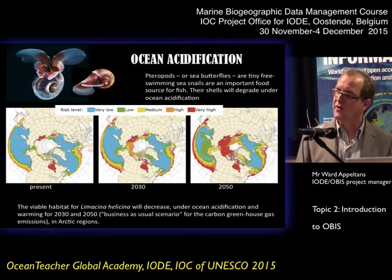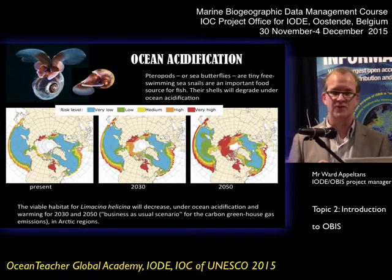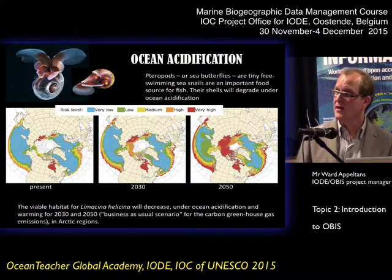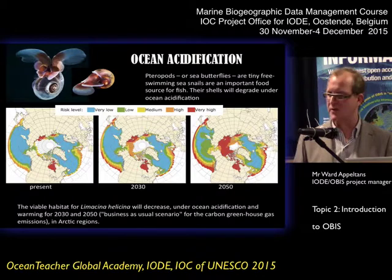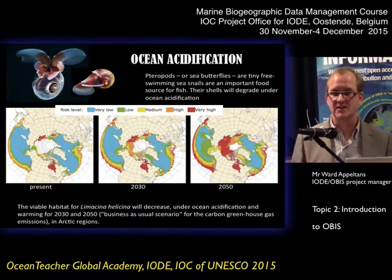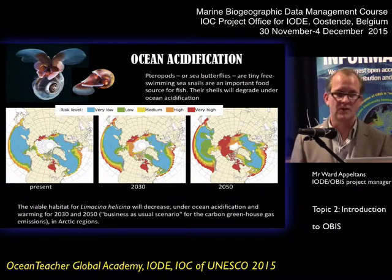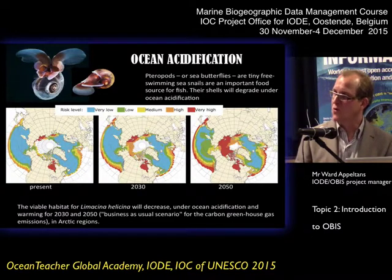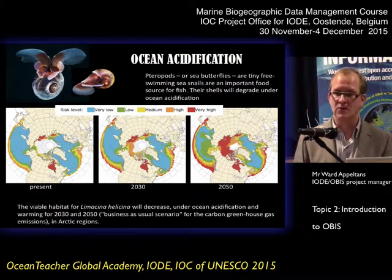Another application is predicting the viable habitat of pteropods. Pteropods are sea butterflies — very small sea snails — but a very important food source for salmon and commercial fish stocks. They are also very vulnerable to ocean acidification, and we all know that the ocean is getting more and more acid. If you look at the CMIP5 scenarios of the IPCC, we can predict that the habitat of pteropods is actually going to decrease very much. Everything shown as red indicates areas where pteropods will not be able to survive — only the blue and maybe green areas are suitable habitat.